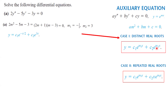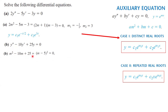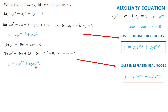Example B illustrates repeated real roots. For y'' − 10y' + 25y = 0, the auxiliary equation is m² − 10m + 25 = (m − 5)² = 0, giving m₁ = m₂ = 5. This is Case 2, so the general solution is y = c₁e^(5x) + c₂xe^(5x).